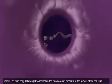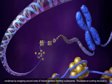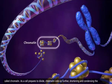Following DNA replication, the chromosomes condense in the nucleus of the cell. DNA condenses by wrapping around cores of histone proteins, forming nucleosomes. This beads-on-a-string structure is called chromatin.